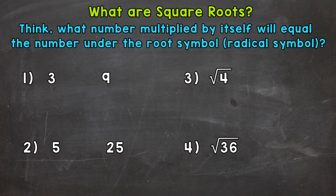When we're looking for the square root of a given number, we need to think about what number multiplied by itself gives us that given number. That may not make any sense now, but after our examples, you'll see exactly what I mean.